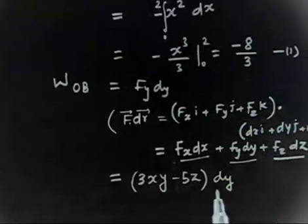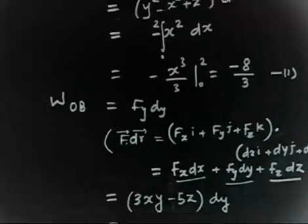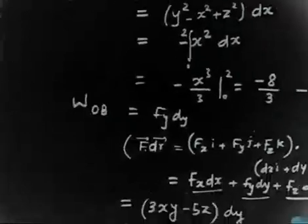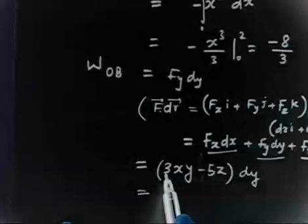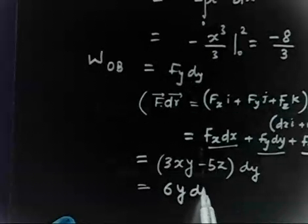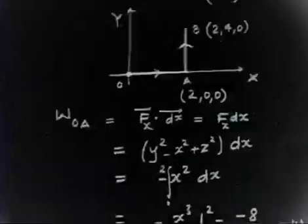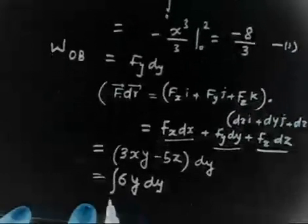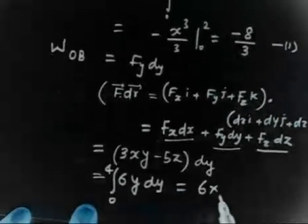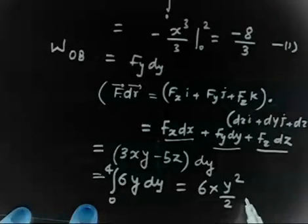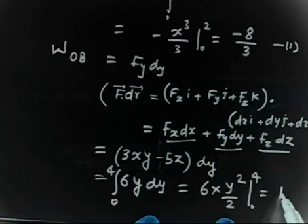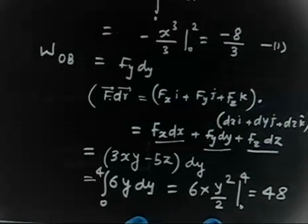Integrating (3xy - 5z)dy along AB: z is 0 and x is always 2, so this becomes ∫6y·dy, integrated from y = 0 to y = 4. This gives 6·(y²/2) from 0 to 4, which is 6·(16/2) = 6·8 = 48 joules. So the work done along path AB is 48 joules.